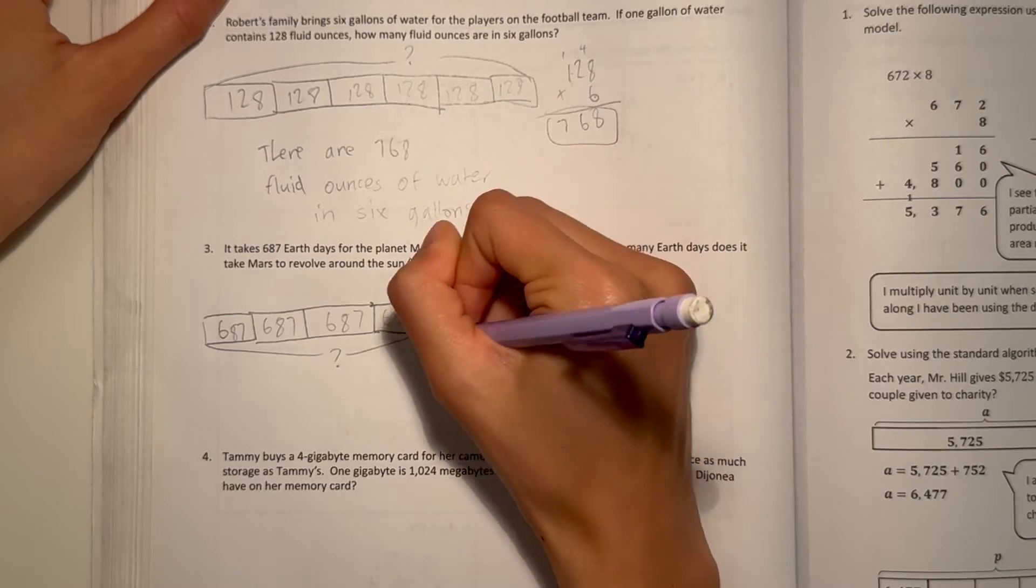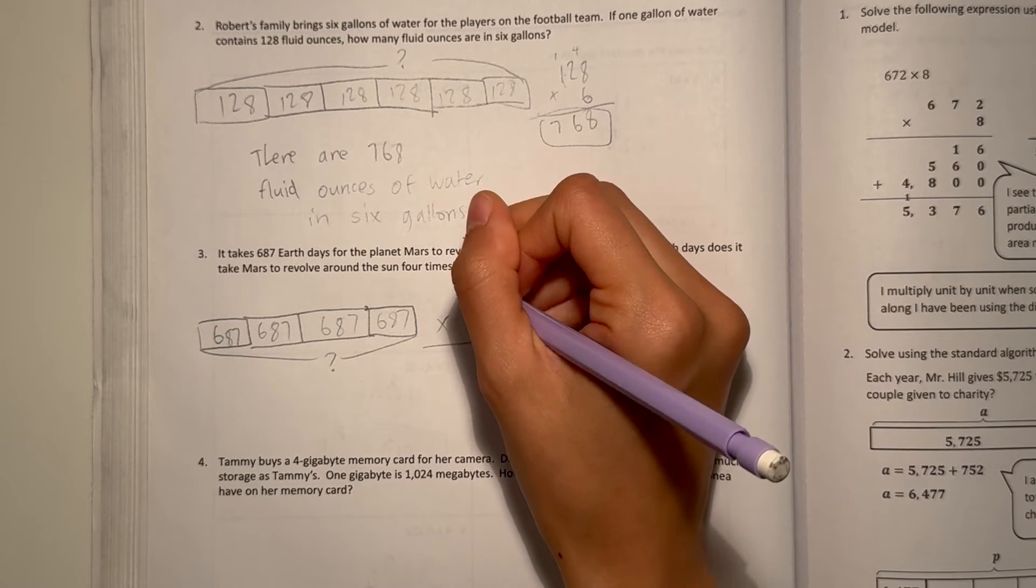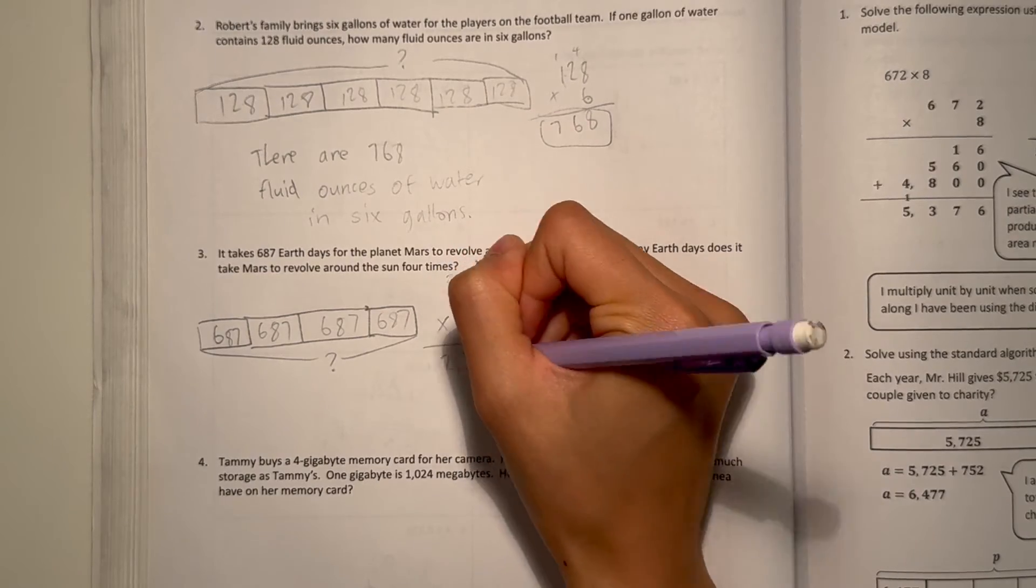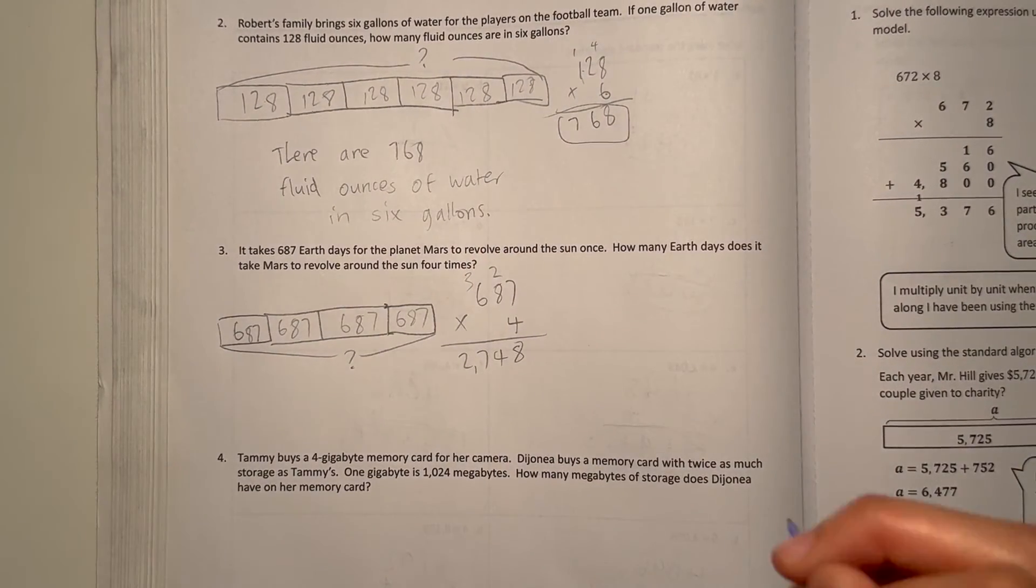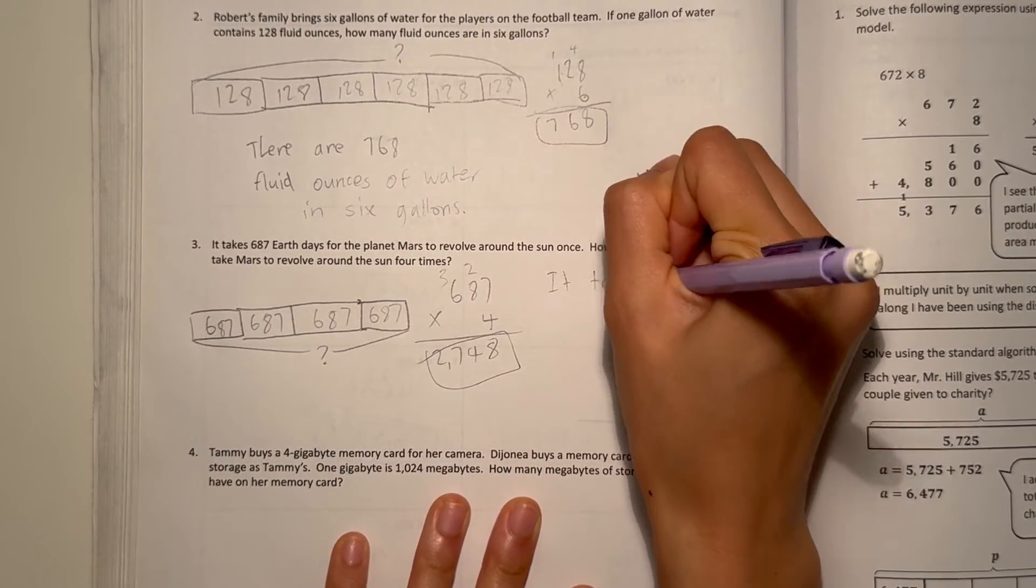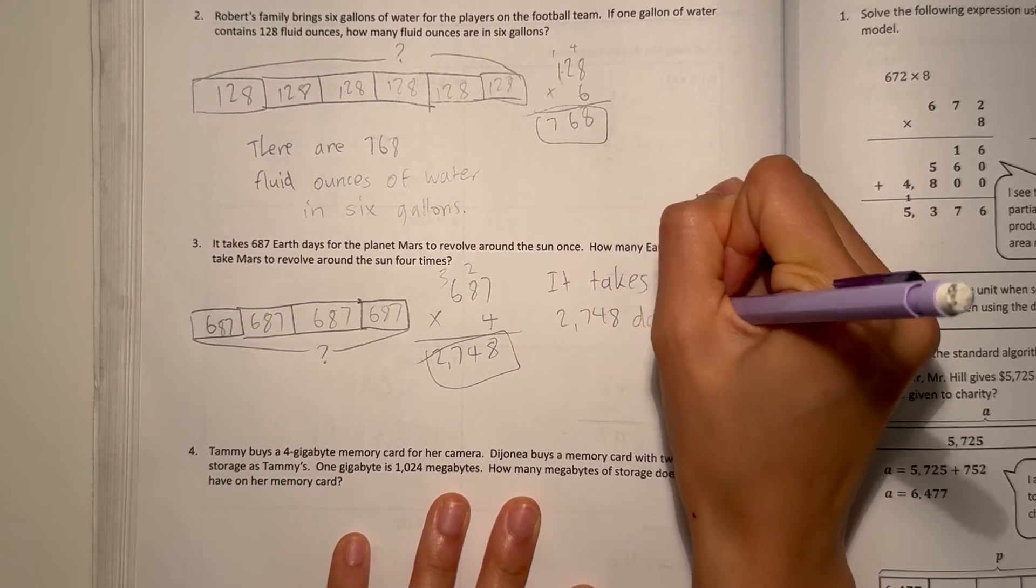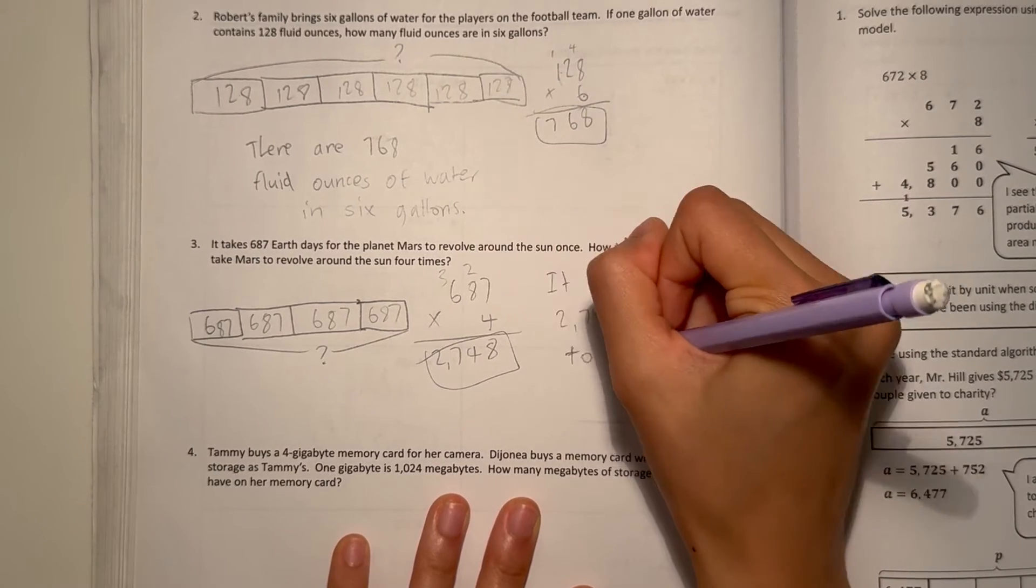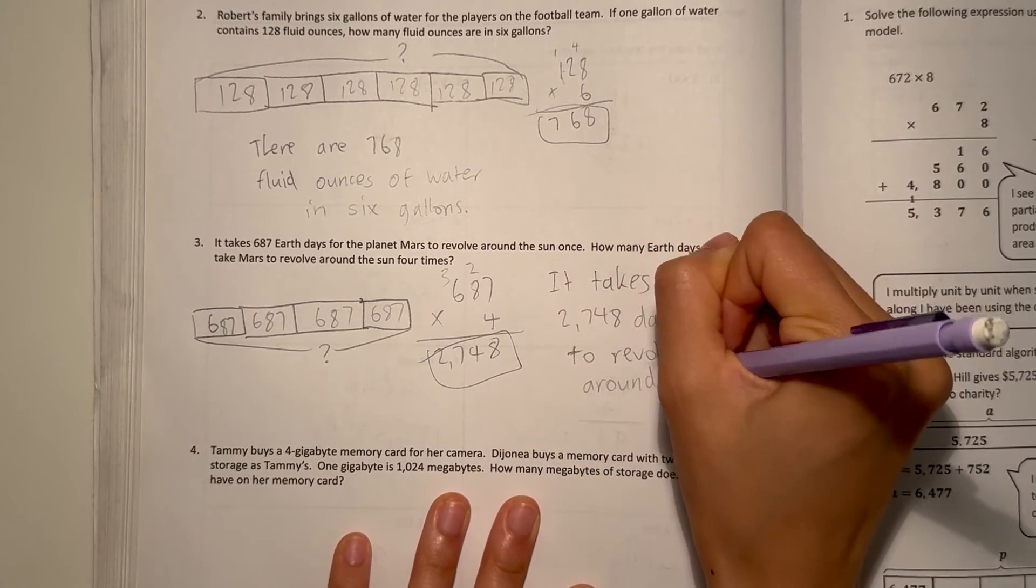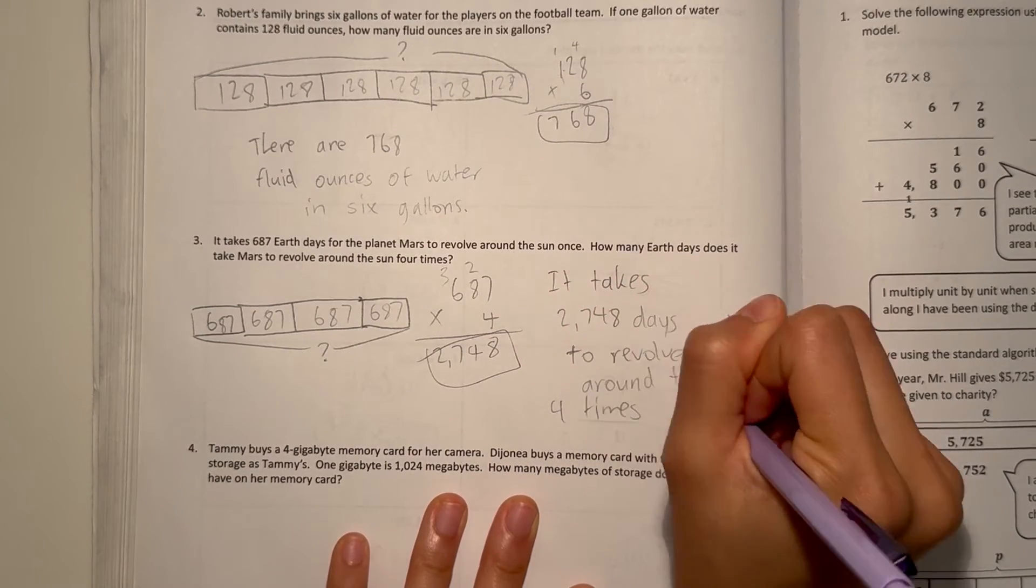687 times 4. 7 times 4 is 28. 8 times 4 is 32, plus 2 is 34. And 6 times 4 is 24, plus 3 is 27. 2748. So that means it takes 2748 days to revolve around the Sun 4 times for Mars.